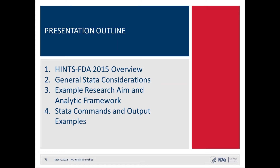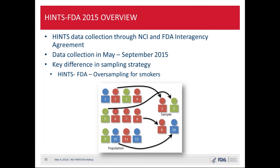HINTS FDA was a special round of HINTS data collection conducted by the National Cancer Institute through an interagency agreement with the Food and Drug Administration. It combines traditional HINTS topics with additional questions about risk perceptions about tobacco products and tobacco product claims. Data were collected between May and September 2015. A key difference is the sampling strategy, which attempted to over-sample for current smokers using county-level smoking rates from BRFSS, stratified into high, medium-high, medium-low, and low smoking rate strata. The overall response rate was 3,738, about 33%.